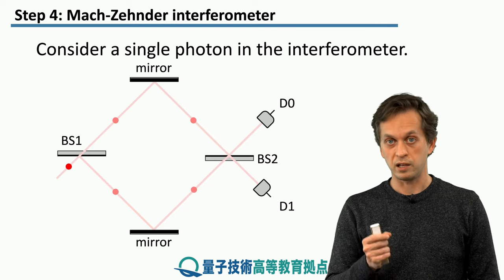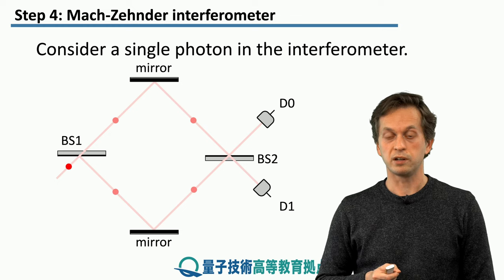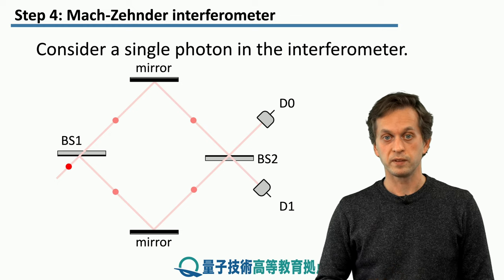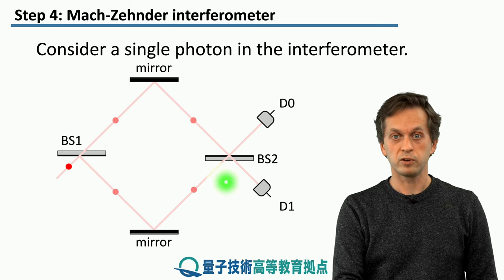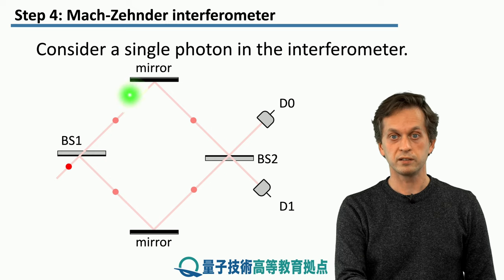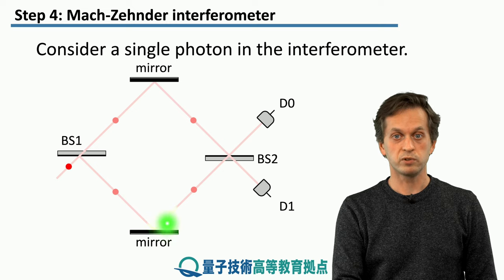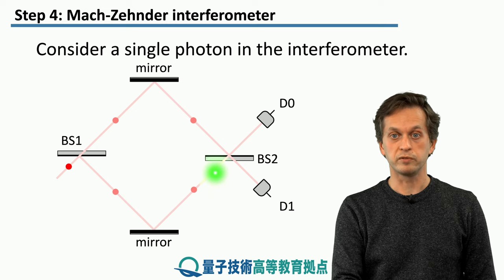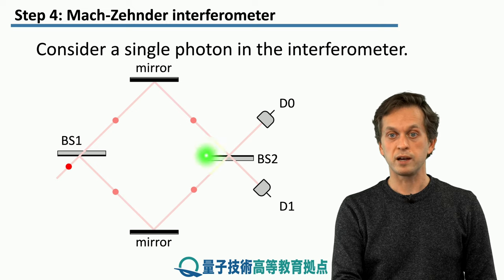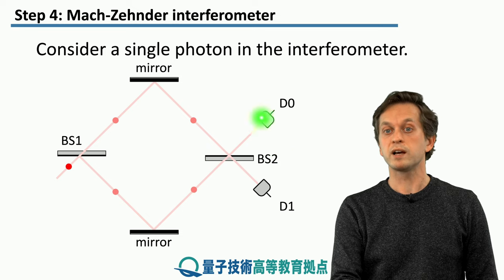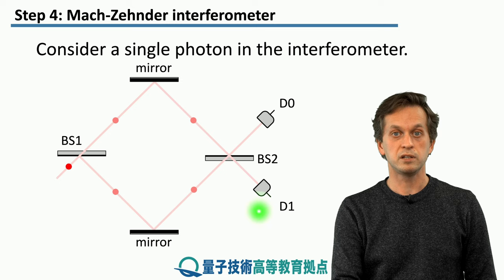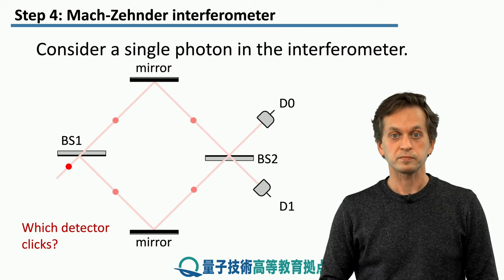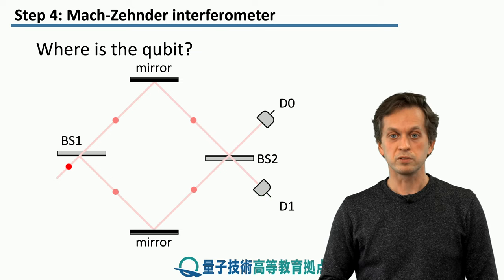Now, let's consider that we have, again, only a single photon entering our Mach-Zehnder interferometer. And then, again, the single photon can be reflected at the first one or transmitted. It bounces off the mirrors, which don't really do anything. They just alter the path of the photon. And then it recombines at the second beam splitter. And we ask the question, does it get detected at D0 or does it get detected at D1?